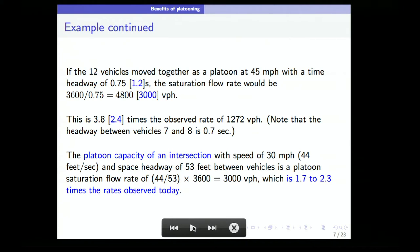So the question is, can we move all these guys together? Let's define the platoon capacity of an intersection. With a speed limit of 30 miles per hour and a space headway of 43 feet between vehicles, you'd get a platoon saturation rate of 3,000 to 3,600 vehicles per hour, which is between 1.7 and 2.3 times more than you get. So in principle, you could increase the throughput by that sort of factor. There are two issues: Can this be done? What is the technology? And number two, if you did that, what will happen in terms of queues and delays?